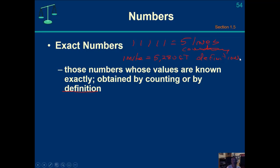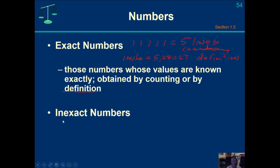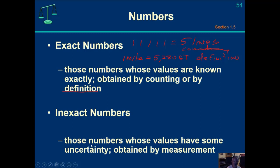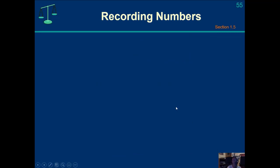Measurement always gives you error or uncertainty. There will always be some uncertainty associated with any type of measurement — those are numbers whose values have some uncertainty obtained by measurement.